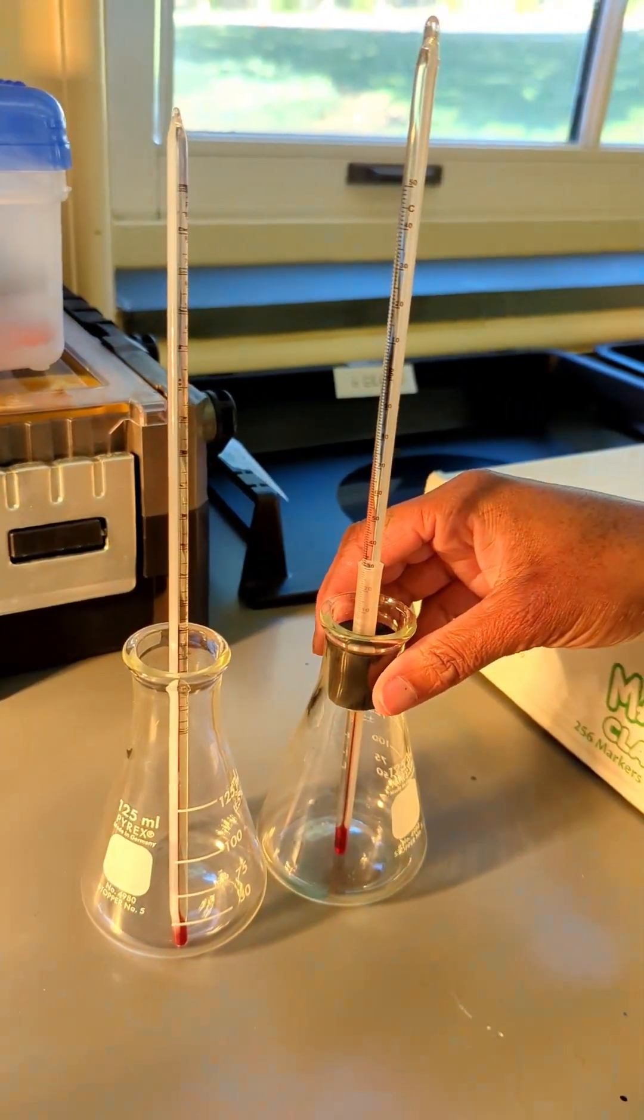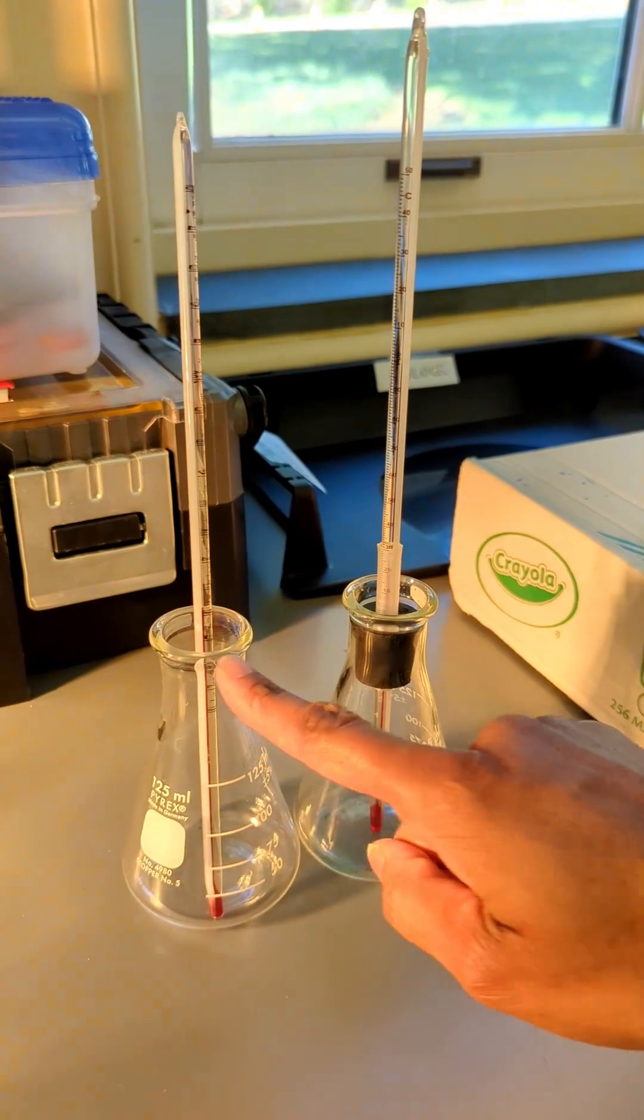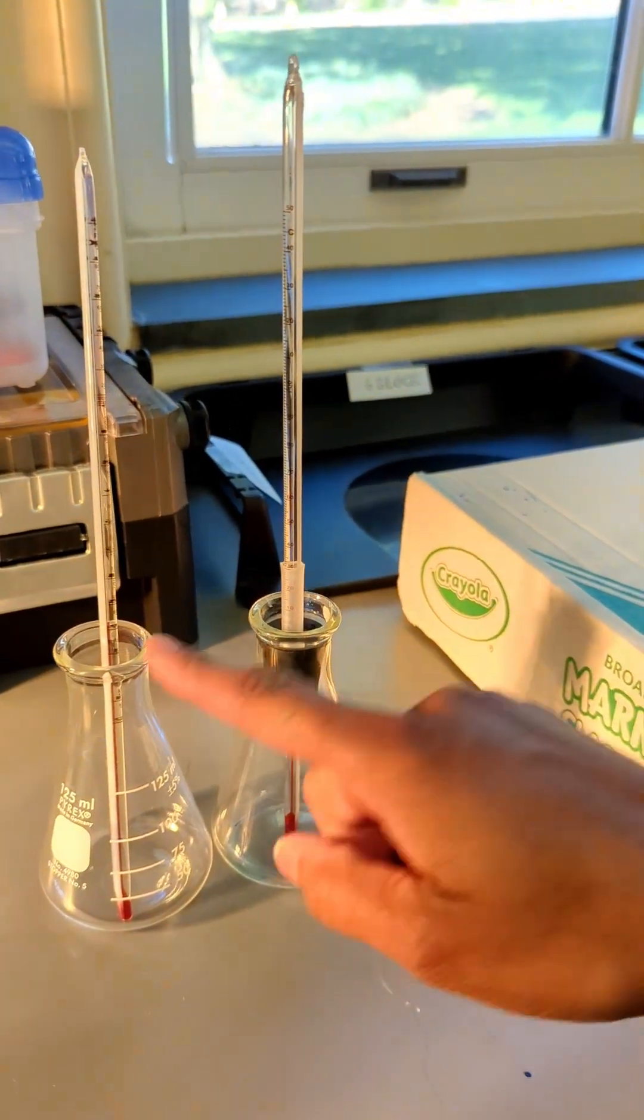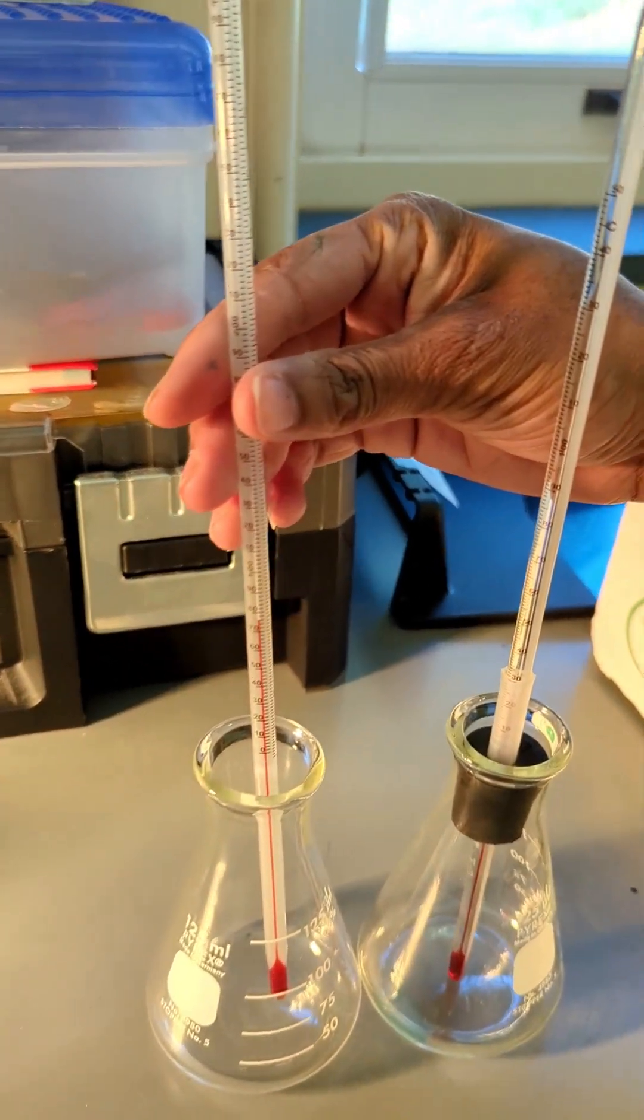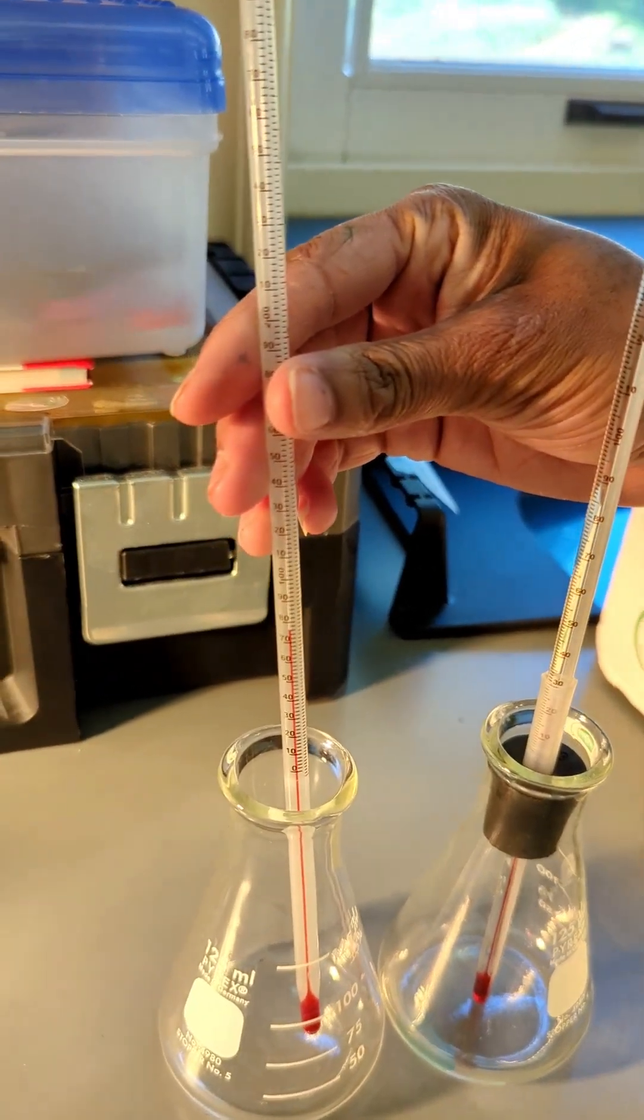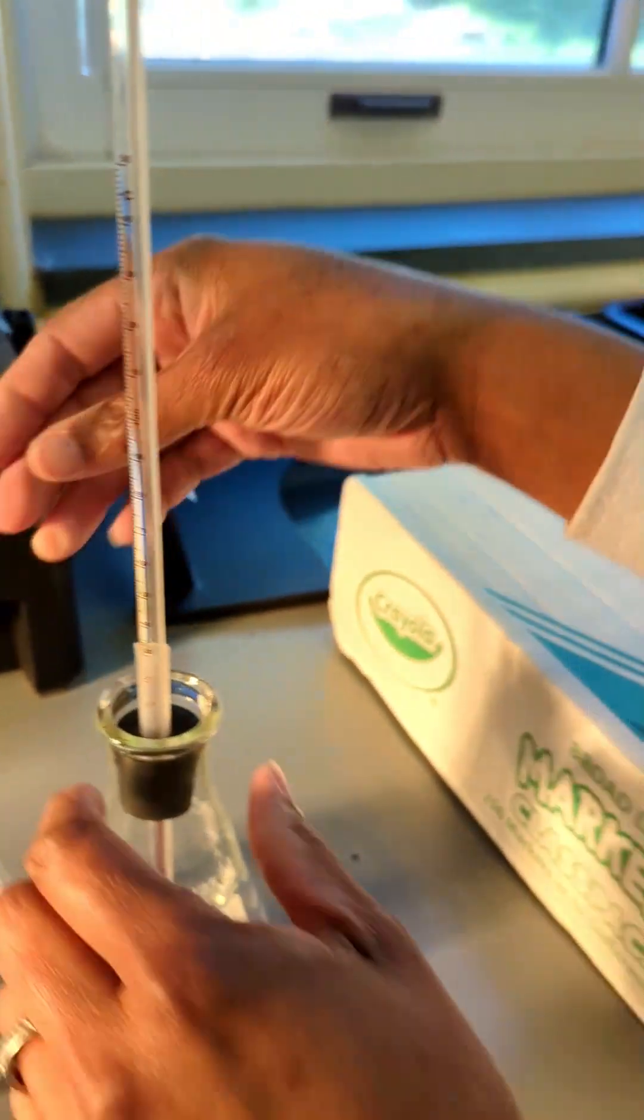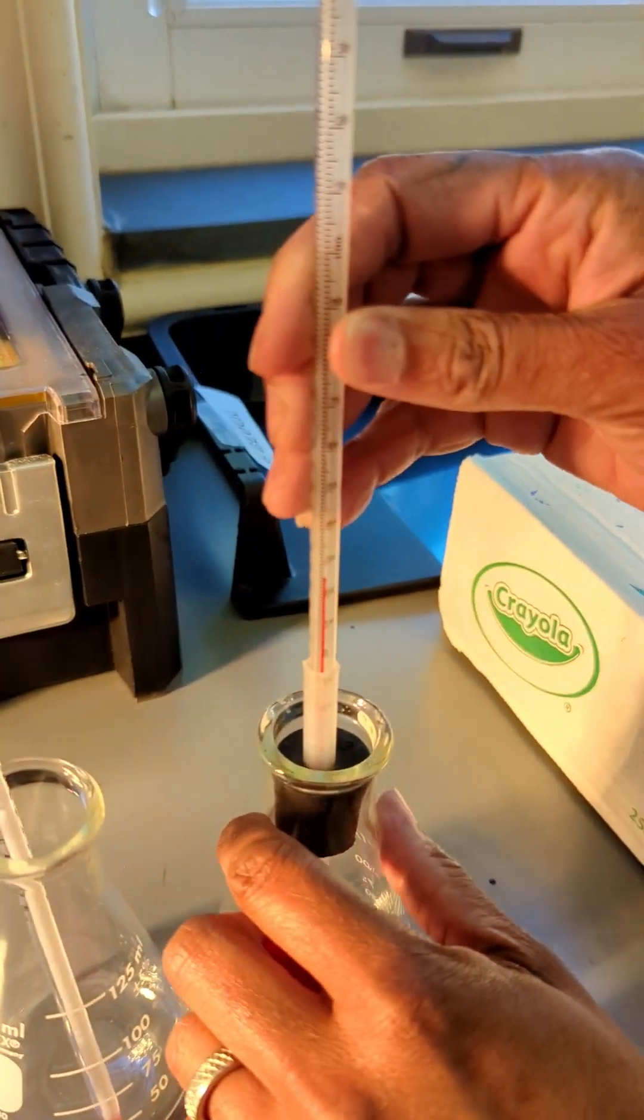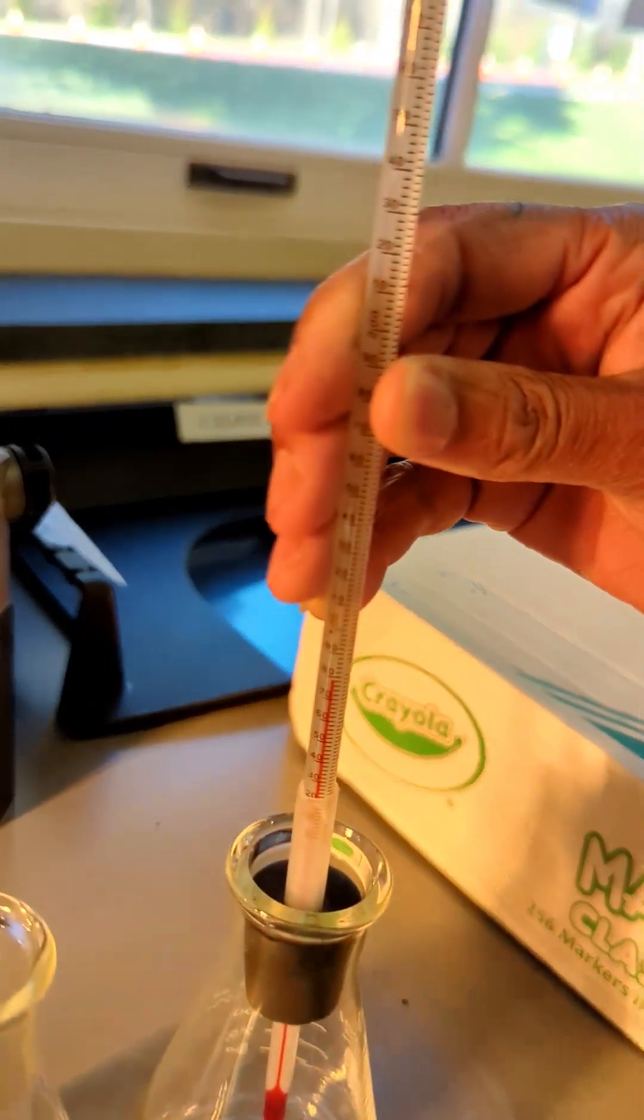All right, so we're going to start with two flasks. One flask without a stopper and then one flask with a stopper. Both have a thermometer inside of them and you can see the thermometer is around the same temperature. That one's around between 74 and 76 degrees Fahrenheit, and then this one is also between 74 and 76 degrees Fahrenheit.